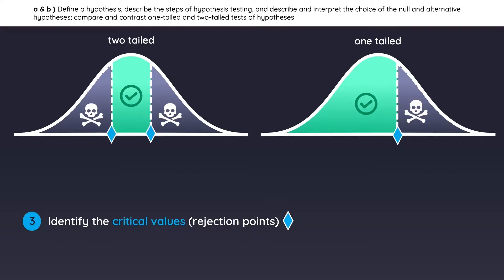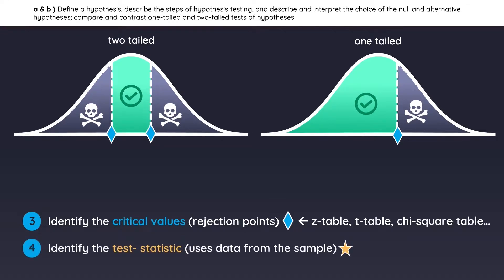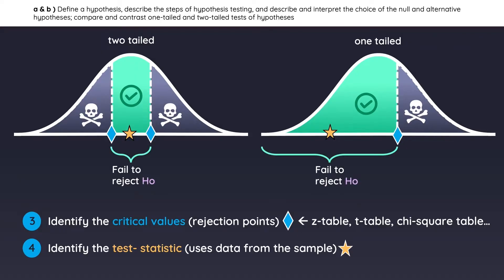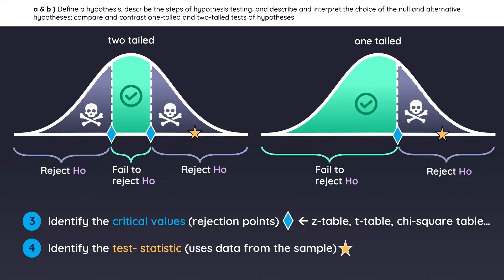The critical values are found in one of these tables depending on the hypothesis, but we'll get to that later. Lastly, we need to calculate a test statistic. You will calculate it by using data from a sample. What you need to know for now is that if the test statistic lands within the safe zone, we cannot reject the null hypothesis. However, if the test statistic lands anywhere within a rejection zone, we reject the null hypothesis.